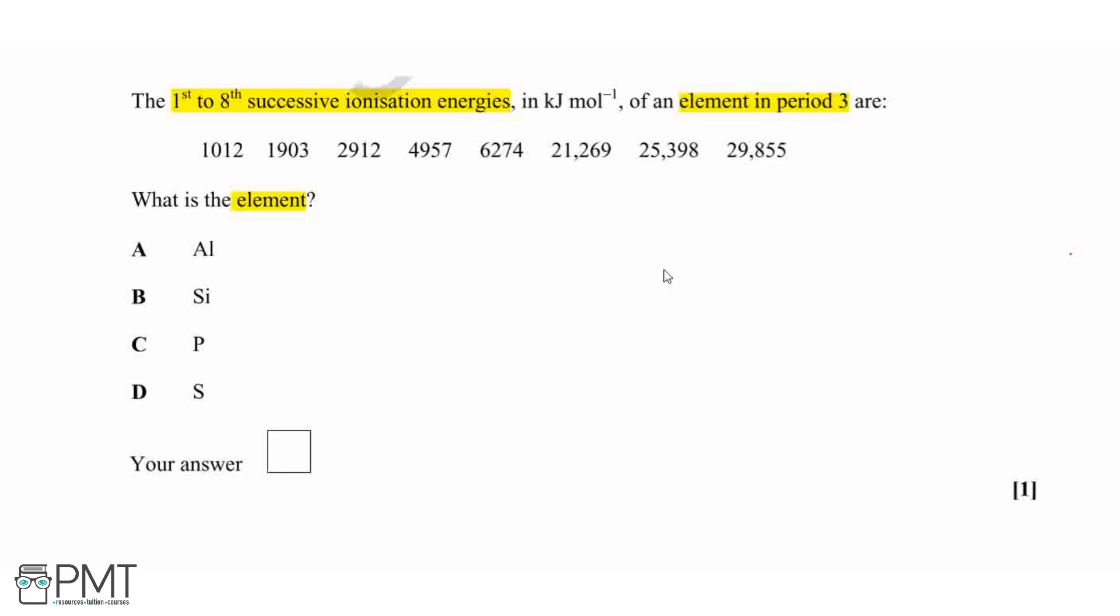What we're looking for in this set of numbers is where there is a big jump in values, because this represents going from an outer shell to an inner shell and there'll be a big jump.